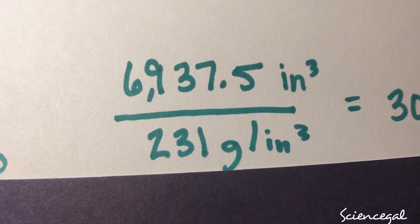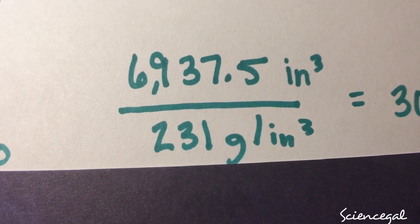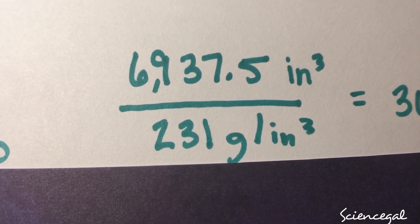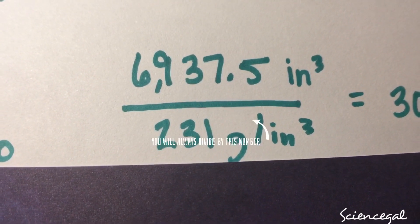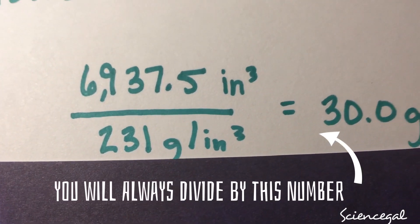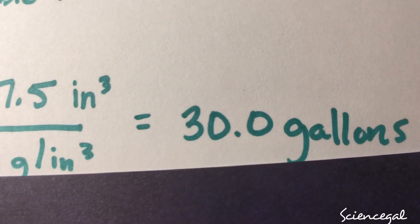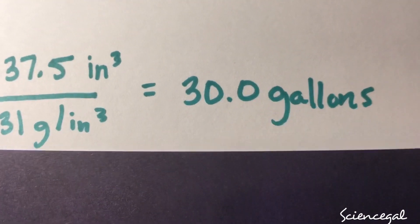So 6,937.5 cubic inches divided by 231, and that's going to give me 30 gallons for the aquarium that I was wondering.